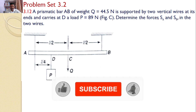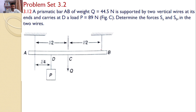Determine the forces SA and SB in the two wires. There is a prismatic bar AB that carries a load P of 89 N. The weight is acting exactly at the midpoint of the prismatic bar, with a value of 44.5 N. Our interest is to find the reactions. This bar AB is suspended by two wires, and because of this load and the weight, we need to find the reactions developed inside these wires.